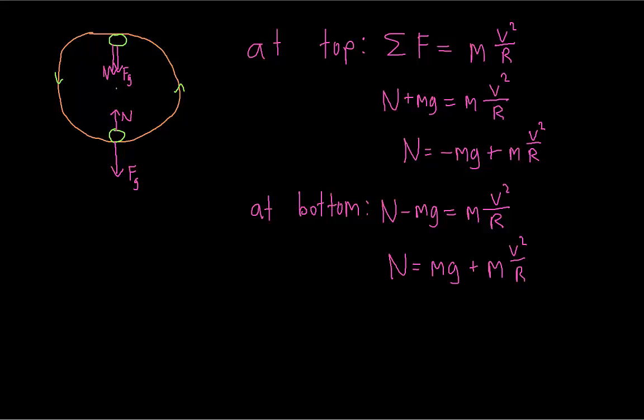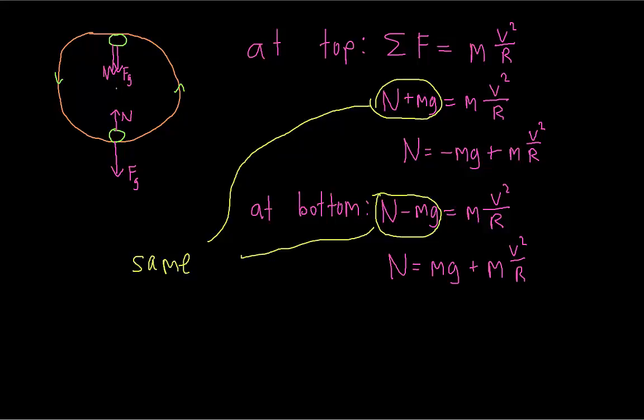Now we have an expression for the normal force at the top and the bottom. As we predicted, at the bottom the normal force is more than at the top, because it's mg plus something else. Note that even though the expressions are different, the centripetal force is the same at both positions — because as long as the speed and the radius of the circle are the same, the centripetal force must stay the same. The net force in the direction of the center of the circle always stays the same as long as the object moves at constant speed.